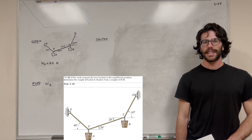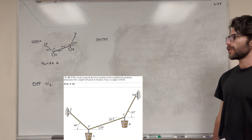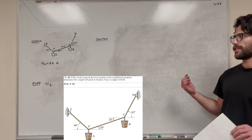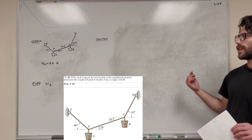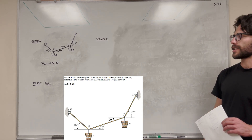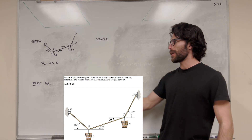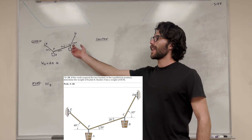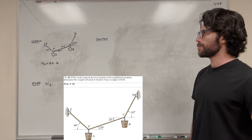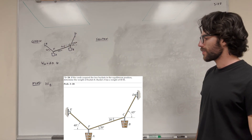Welcome back to statics. Let's solve this problem. We have these two buckets being held by three cables, and all we're given is the weight of A is 60 pounds. We're trying to find the weight of bucket B that allows these cables to hold it in this position. So let's go ahead and solve for that.